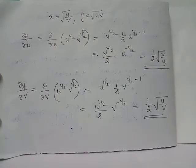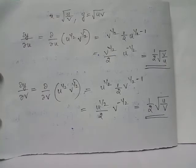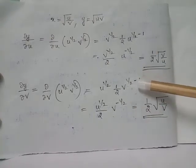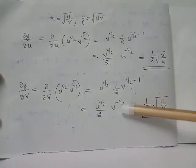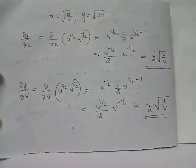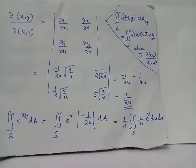For ∂y/∂v, we apply ∂/∂v to y = u^(1/2) · v^(1/2), treating u as a constant. Applying the power rule to v^(1/2) gives 1/2 · v^(-1/2), so ∂y/∂v = 1/2 · √(u/v). Having found all partial derivatives, we expand the determinant and obtain the Jacobian as -1/(2u).